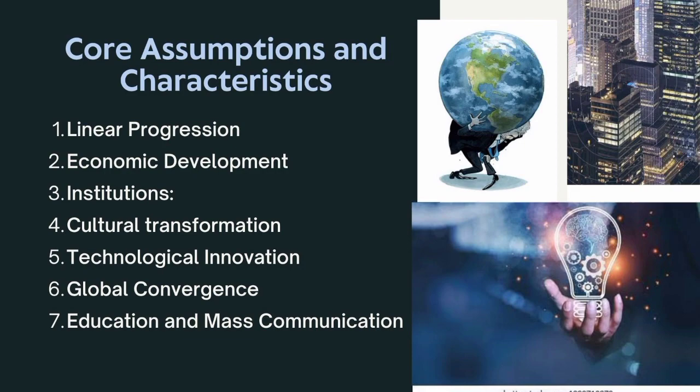Modernization theory also talks about global convergence — that societies will eventually converge to a similar modern model. Regarding education and mass communication, the theory says these are crucial agents of change. Just as there are pillars of government like the judiciary, legislature, and executive, media is considered a fourth pillar because it is a crucial agent of change that spreads awareness. Education and mass communication are thus emphasized as tenets that lead societies towards modernization.